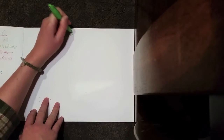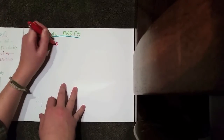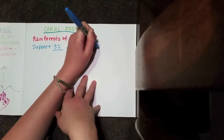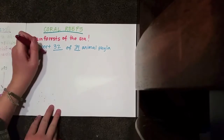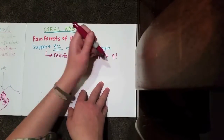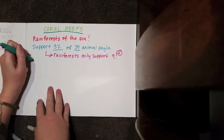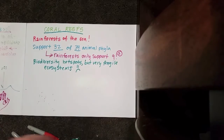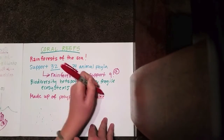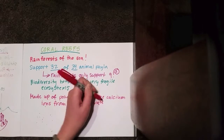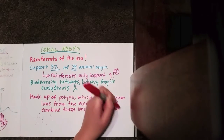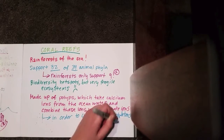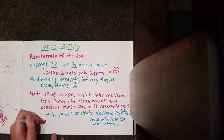Coral reefs — they are the rainforests of the sea. As a matter of fact, they supply 32 of the 34 animal phyla, while rainforests only support 9. References are in the video description. Coral reefs are biodiversity hotspots but very fragile ecosystems. Organisms called polyps take calcium ions from the ocean water, combine them with carbonate ions, and form a limestone skeleton, which serves as a base for coral colonies. The largest coral reef is the Great Barrier Reef, and it has been growing for 20,000 years.